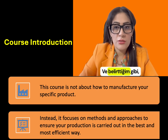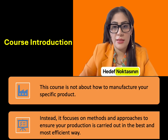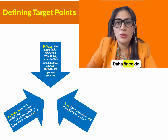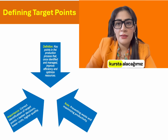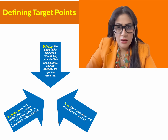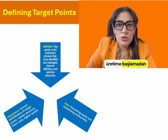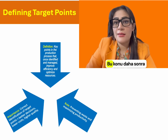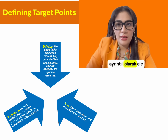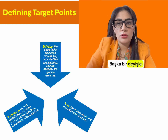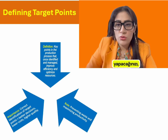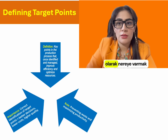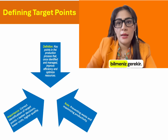The first lesson of this course is about setting the target point. The target point means that before you start production you should know what you are aiming to achieve. In other words, you need to know with what yield you are going to produce, with what specifications you are going to manufacture your product, and where exactly you want to end up.